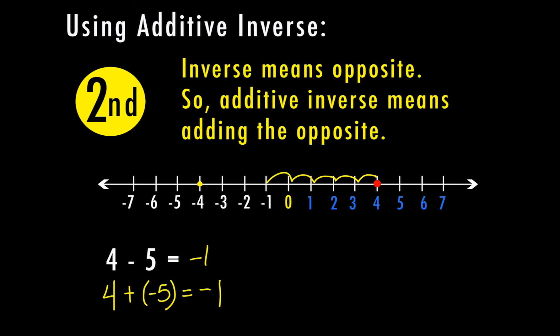Let's look at one that's a little more complicated: eight minus a negative three. In this case, we have to use our additive inverse because you can't subtract a negative. So we bring down our eight, change our minus to a plus, and do the opposite of negative three, which is positive three. When you have minus a negative, it turns to a positive. So now I'm just adding eight plus three — same sign — so I add, and my answer is going to be positive 11.